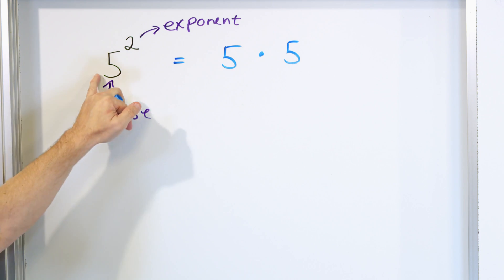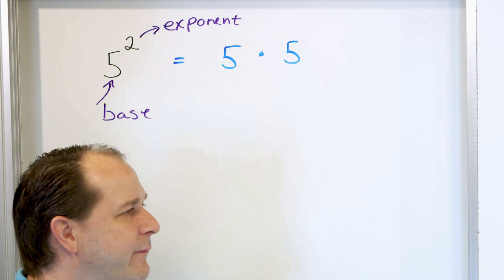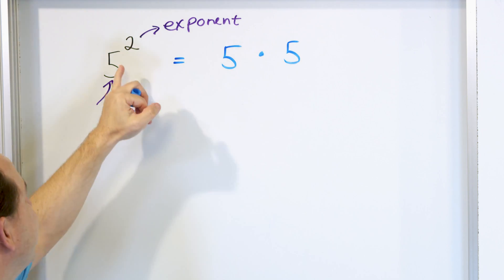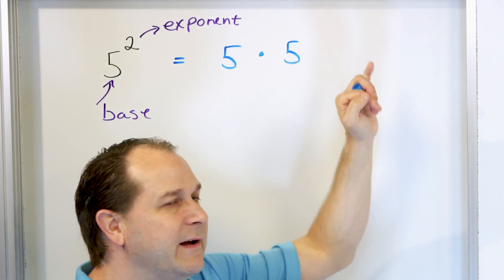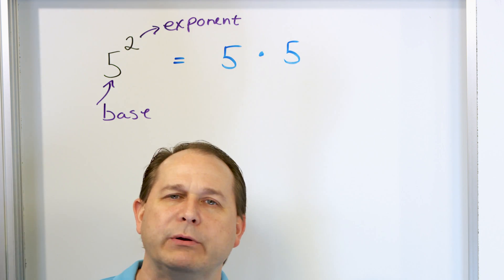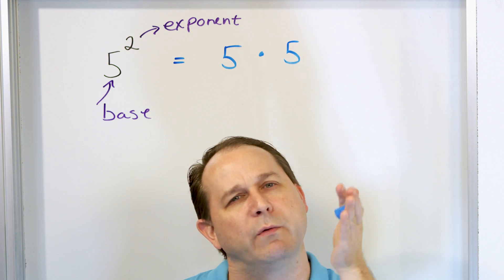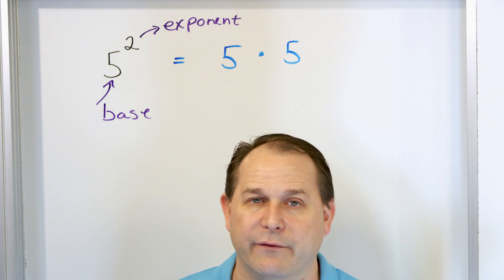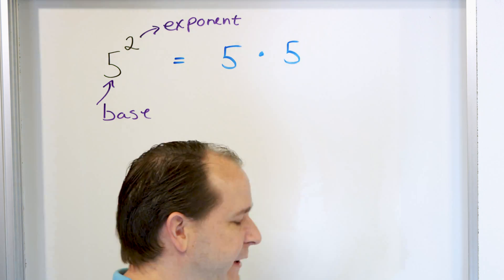If it was five to the power of three, it would be five times five times five — we would have three of them. If it was five to the power of four, it would be five times five times five times five. So the exponent tells you how many times you multiply by itself in order to get the answer.